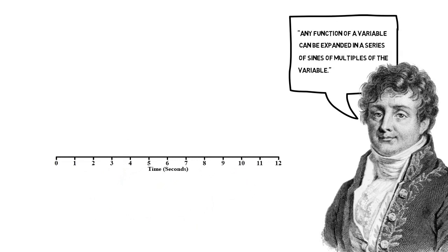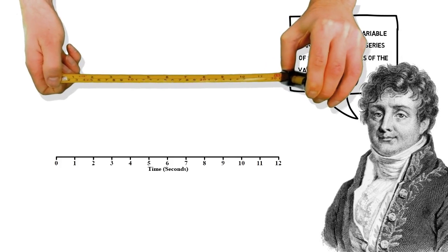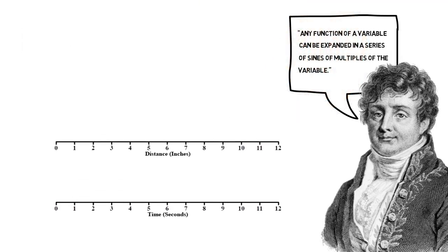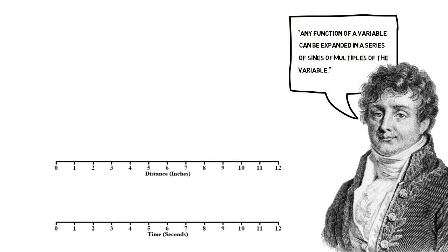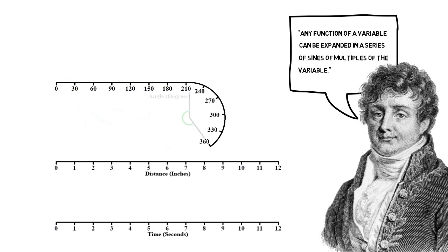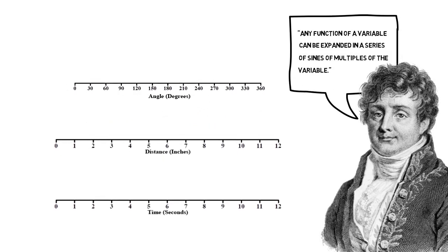However, when Fourier came up with his theory, he was measuring heat flow, so his variable may well have been distance. Therefore, we need some common variable that can apply to all types of signals. When talking about sine waves, angles are the common variable. This variable can then be scaled to apply to whatever signal we are dealing with.